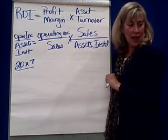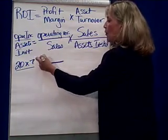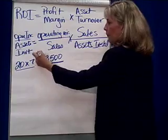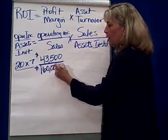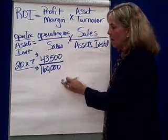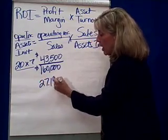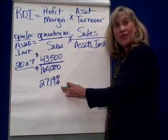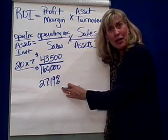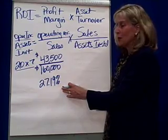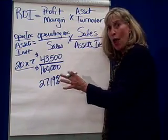Let's take a look at 2000X7, referring to problem four for information. The operating income in 2000X7 was $43,500, found on the income statement. Sales that year were $160,000. So the profit margin is $43,500 divided by $160,000, which equals 27.19%. That means about 27 cents of every sales dollar is profit. That looks pretty good, but I can't really make a judgment on that unless I can compare it to something — like what were you expecting, or what do your competitors do?